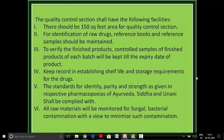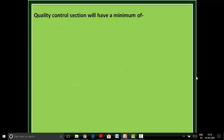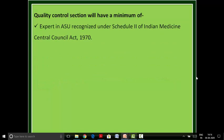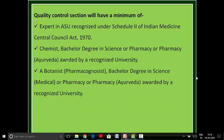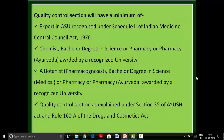All raw materials will be monitored for fungal and bacterial contaminations with a view to minimizing such contamination. The quality control section will have a minimum of experts with a degree in ASU-recognized streams under Schedule 2 of the Indian Medicinal Central Council Act 1970, and a chemist with a bachelor's degree in science or pharmacy or pharmacy in Ayurveda awarded by a recognized university. Quality control section as per Section 35 of the Ayush Act and Rule 160 of the Drug and Cosmetics Act, along with the list of equipment recommended in Schedule T.